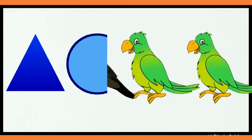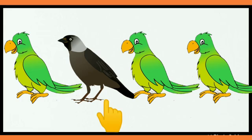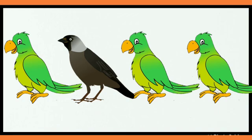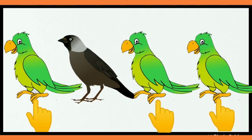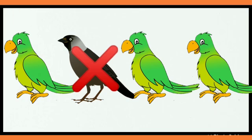Good job! Now I can see some colorful birds over here. This is a parrot. This is a crow. One more parrot and another parrot. Can you tell me what is same and what is different over here? Think! Very good! In this picture, parrots are same and the crow is different. The crow is the odd one out. So let's cross out the crow that is different or odd.